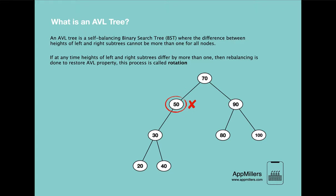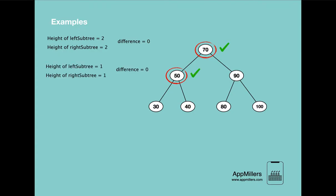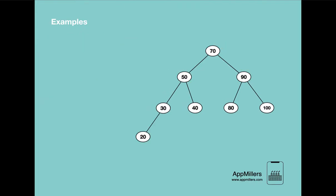Now let's look at some examples of binary search trees and try to identify if they are AVL trees or not. In the first example, starting from the root node, both left and right subtree heights are 2, so the difference is 0 — the root node is balanced. The next node also has both subtree heights of 1, so the difference is 0 and it is balanced. Continuing to the next node, the left and right subtree heights differ by 1. So all nodes are balanced, meaning this is an AVL tree — a balanced binary search tree.